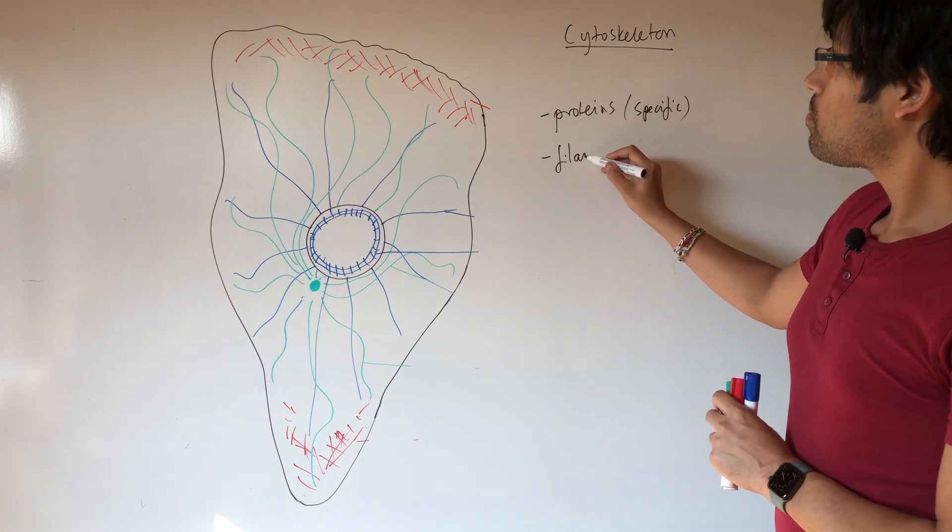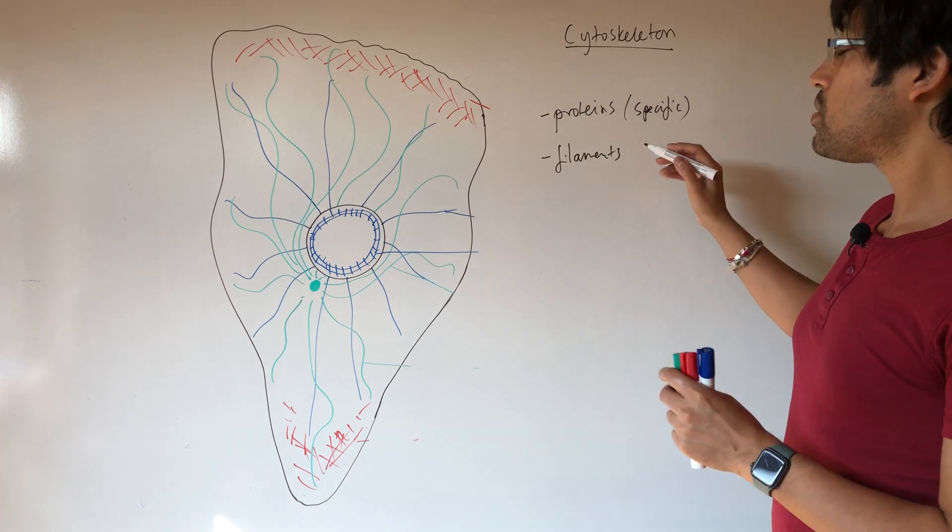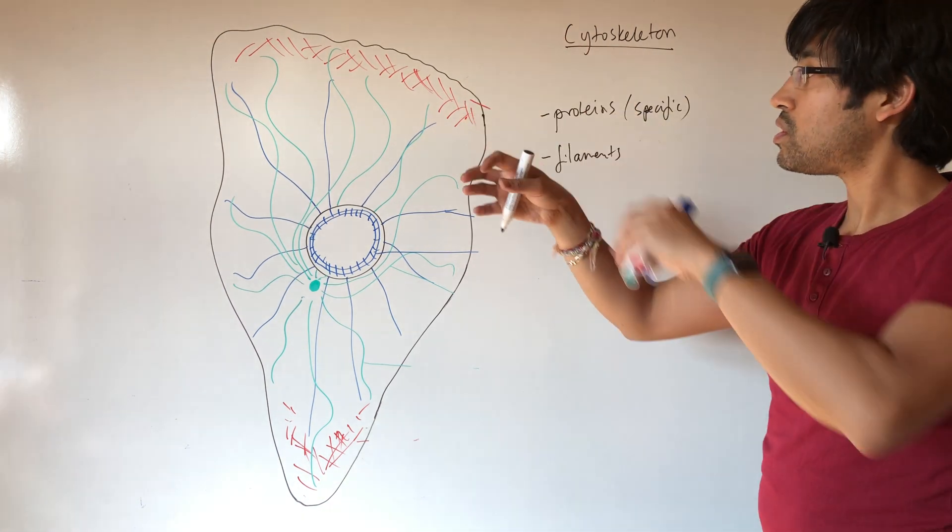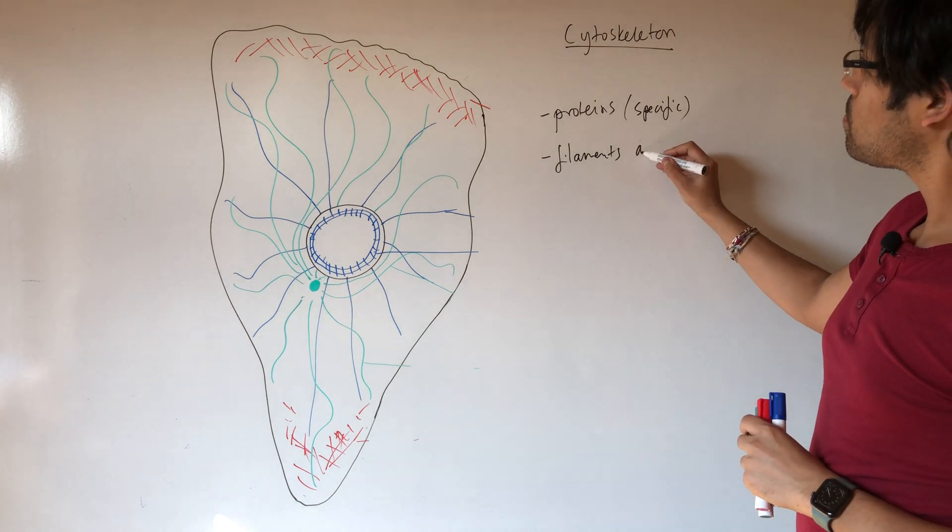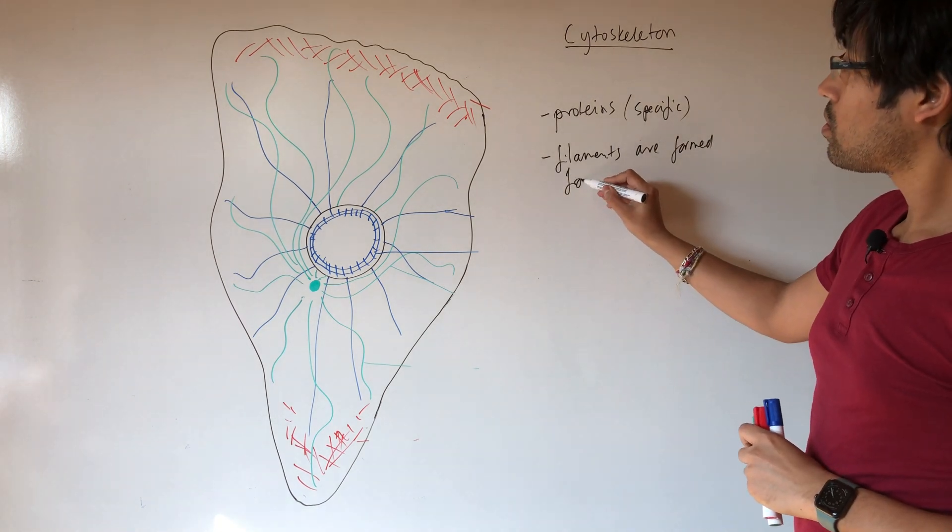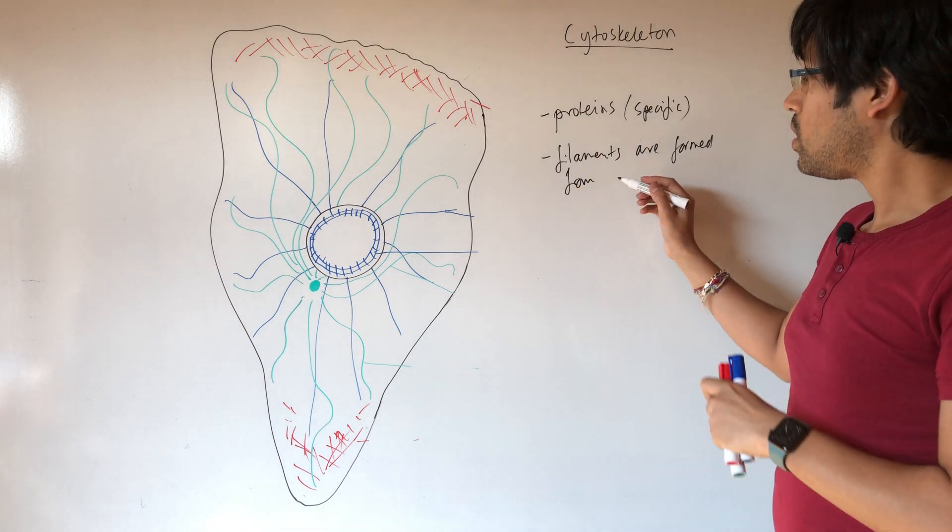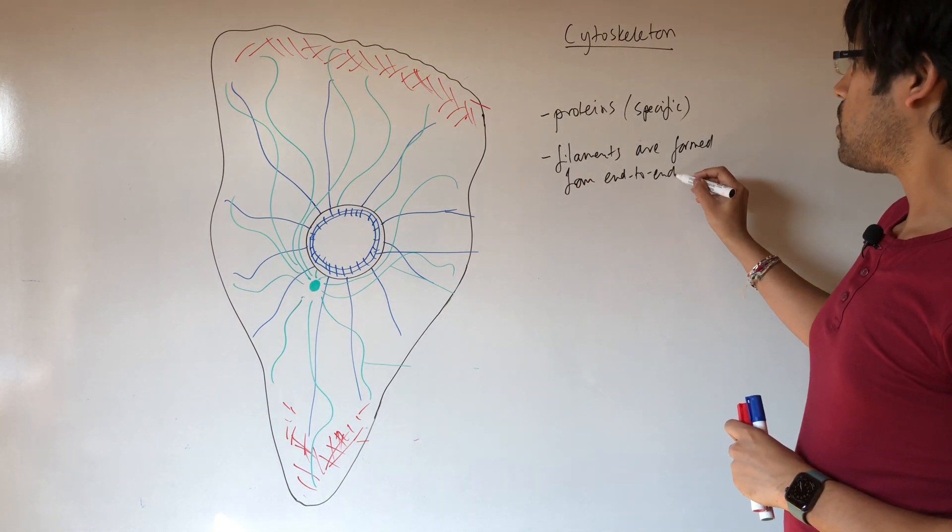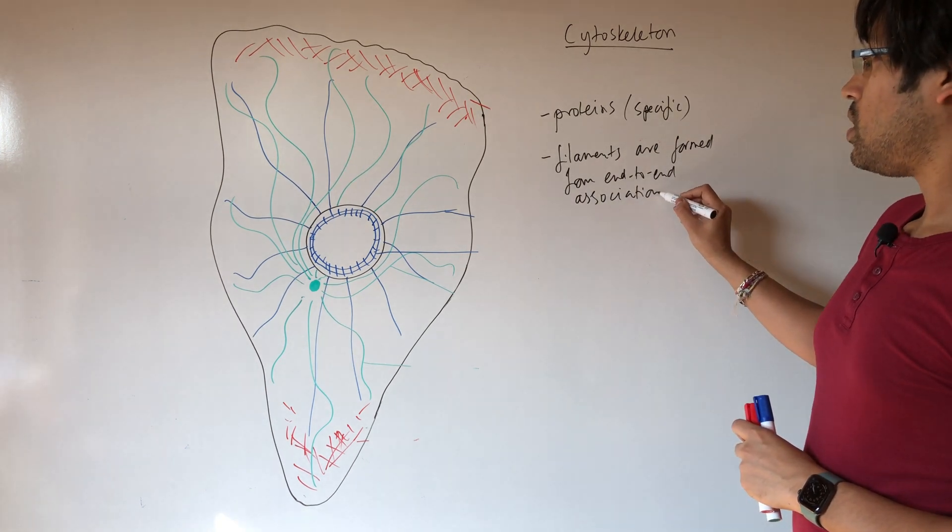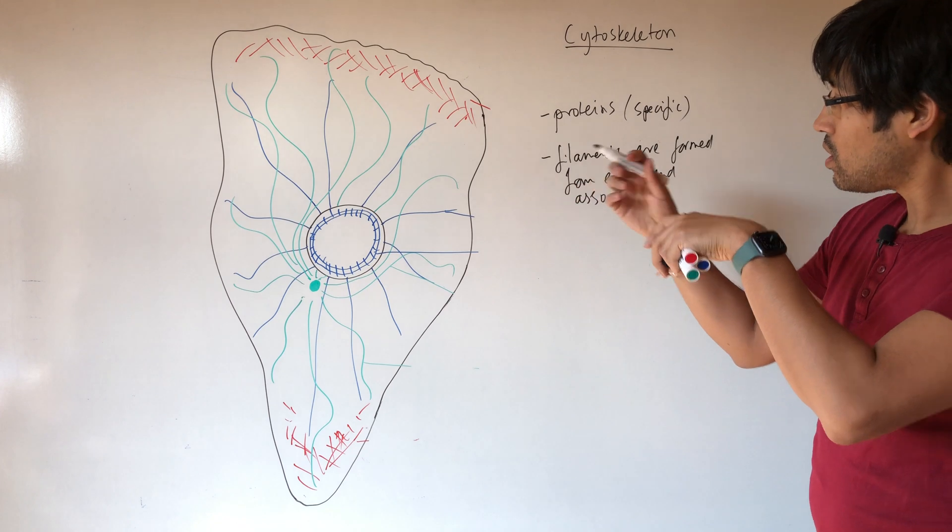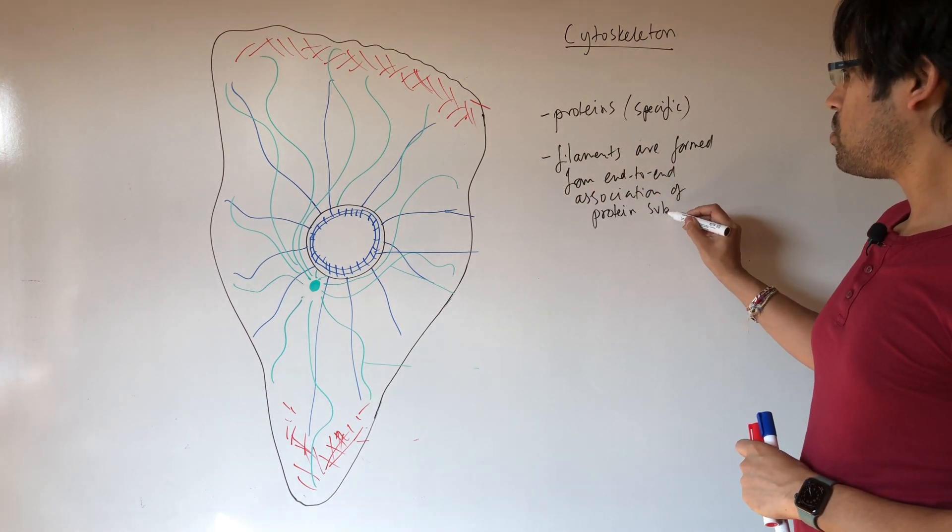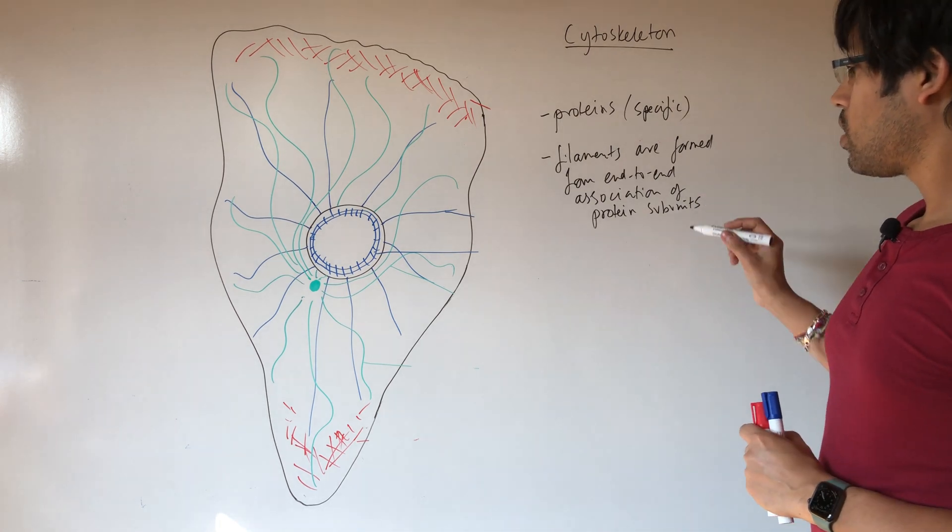So the filaments, the filaments are formed by the end to end joining of these proteins. The filaments are formed from the end to end, let's call it association. The end to end association of the protein subunits.